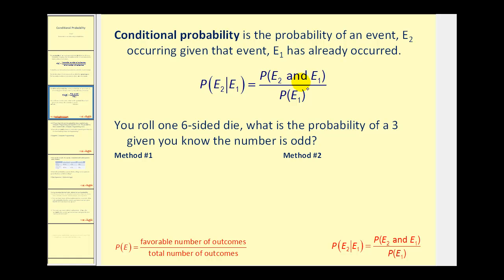There's one thing to keep in mind: it's great to have formulas to help us out, but if we can make sense of the situation then we don't have to rely on these formulas and we can actually understand exactly what's happening. For this first problem we'll look at it using two different methods — one, the basic probability formula, and two, the conditional probability formula.